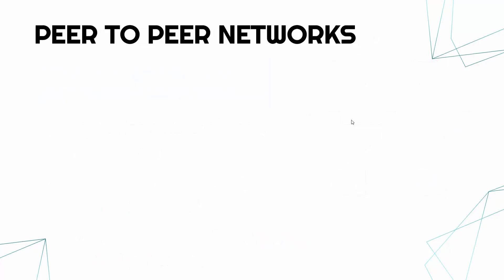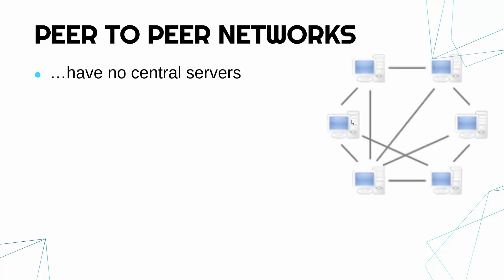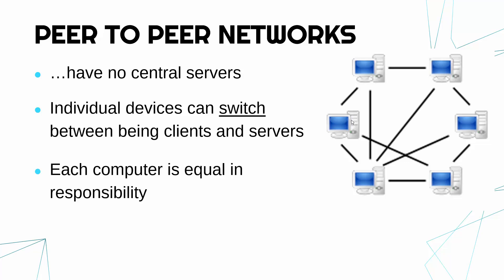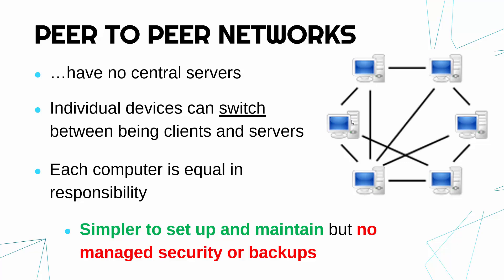Most networks are client-server networks, but there is also a different type called a peer-to-peer network. These have no central dedicated servers — the network doesn't have a big computer working to provide data all the time. Instead, individual devices are able to switch back and forth between being clients and servers. Each computer has its own job and is in control — each computer has equal responsibility. In a client-server network the servers are in charge, but here the individual computers are equal.